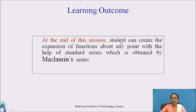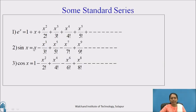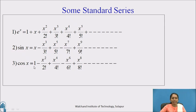At the end of this session, students can create the expansion of functions about any point with the help of standard series obtained using Maclaurin's series. The exponential series e^x contains terms of ascending powers of x. The sine series contains terms in ascending odd powers of x with alternating minus and plus signs. In the cosine series, it is expanded in ascending even powers of x with alternating minus and plus signs. In all three series, each term contains a denominator with factorial notation, and the power and the number in the denominator are the same.